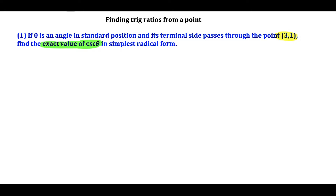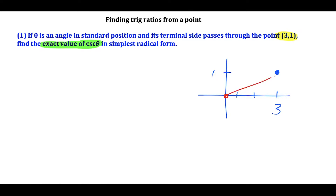So what we're going to do here is sketch this out. The point (3, 1) goes to the right three units and up one unit. We want to connect the origin to the point (3, 1), and we also want to draw in the horizontal line going to the right three units and going up one unit like this.